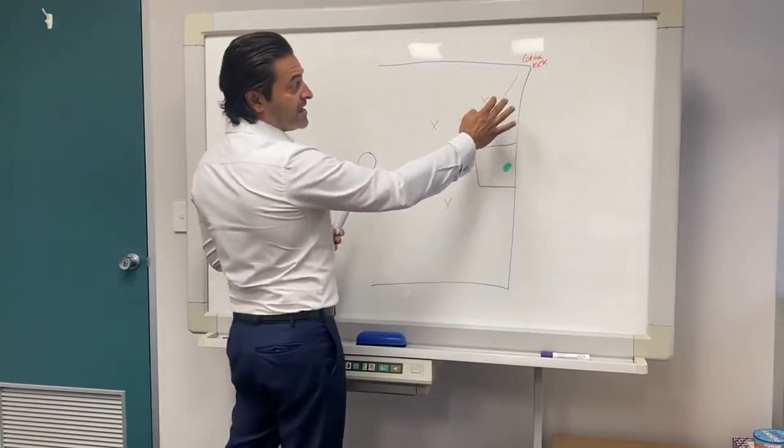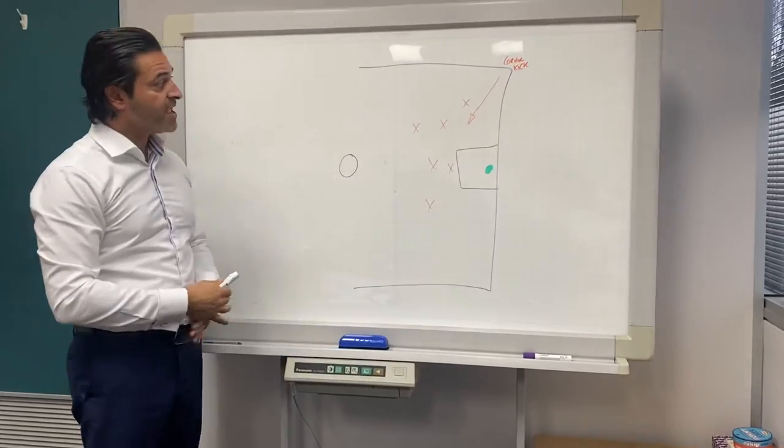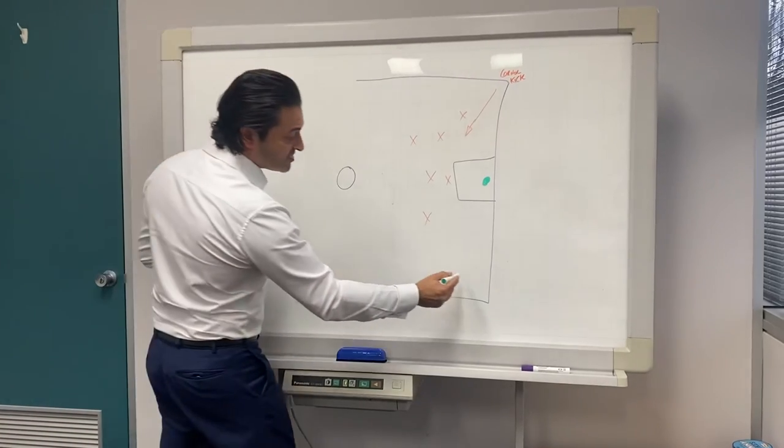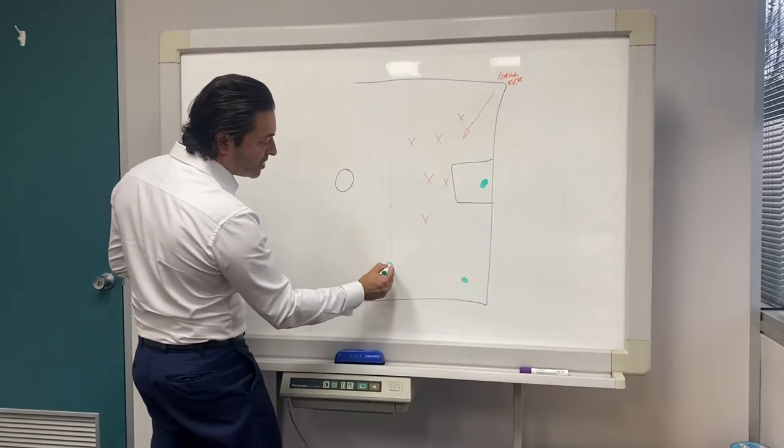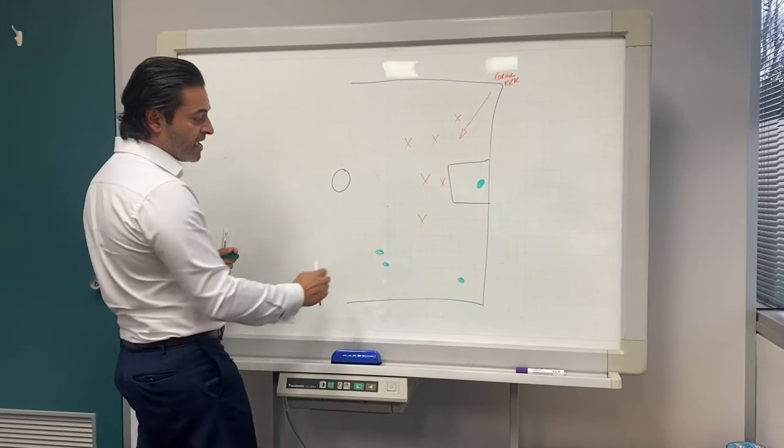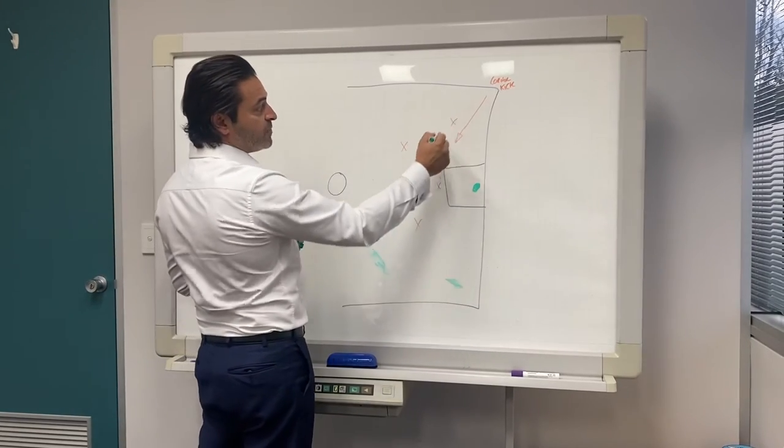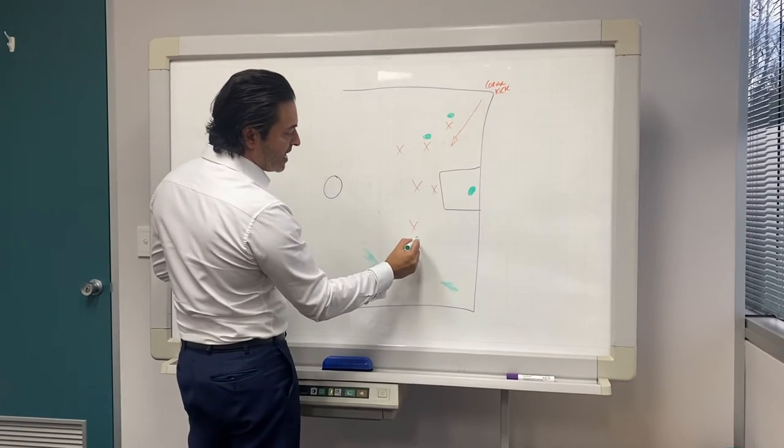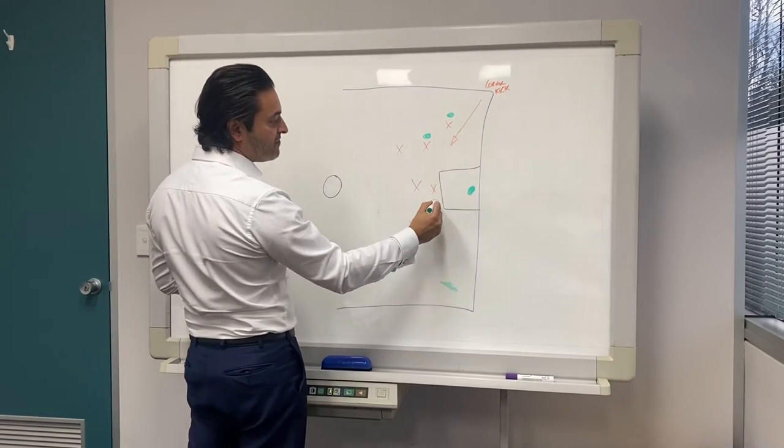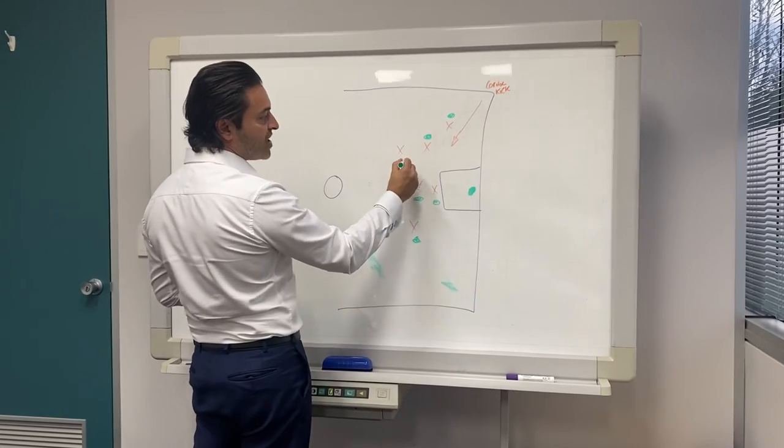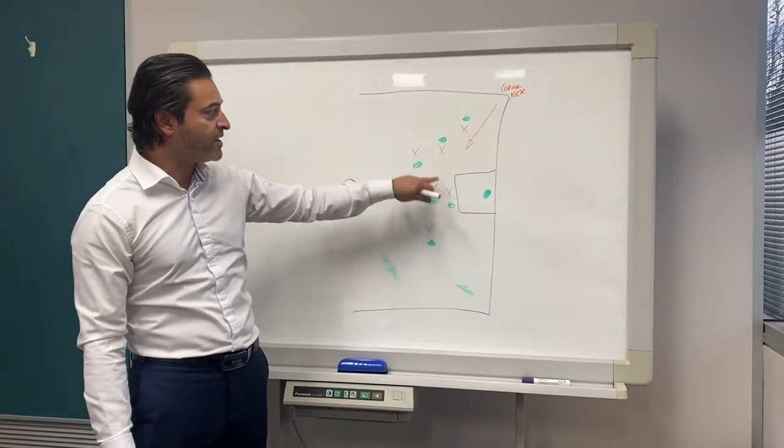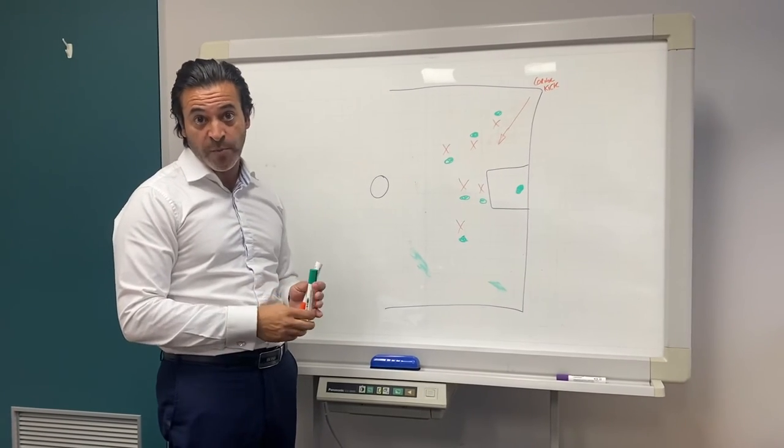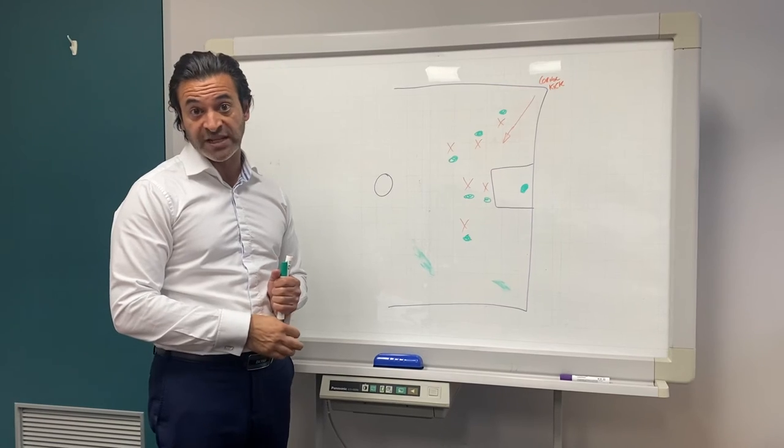So as an example, if the other team has a corner kick and they've got their players here, then the Panthers, I don't want to see someone standing over here or two people together over here. Every player should be matching up. So our right-back and our right-wing and our left-wing, left-back, central defender, striker, every Panther must be on someone from the other team. That way we have the best chance of stealing the ball back and them not scoring. It's really important.